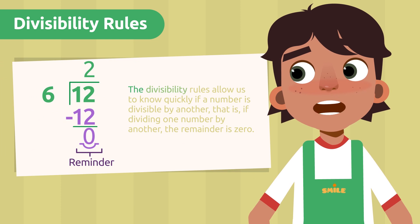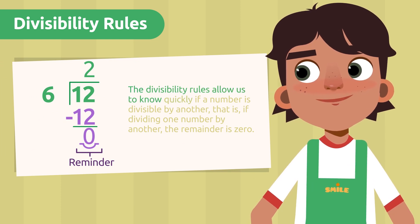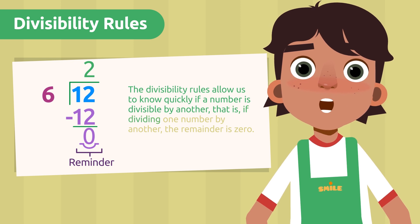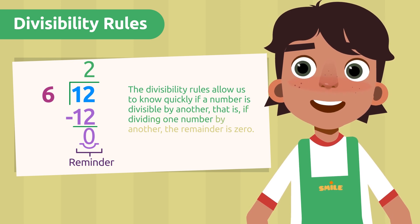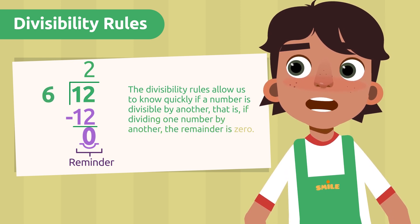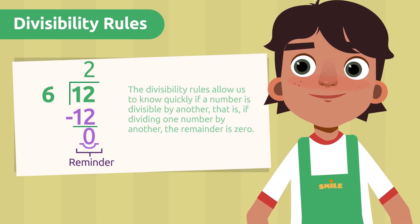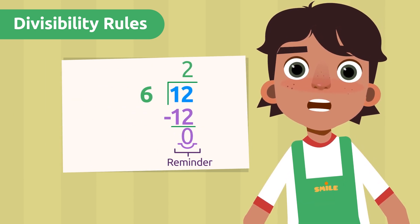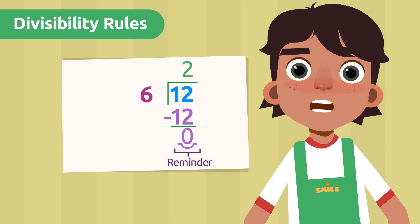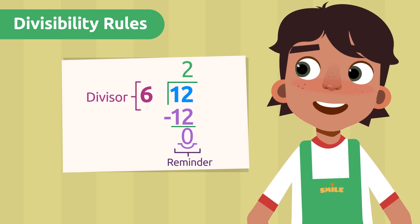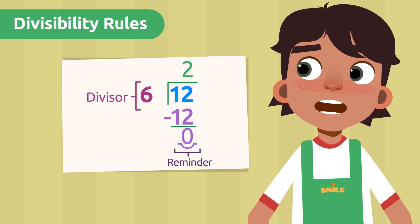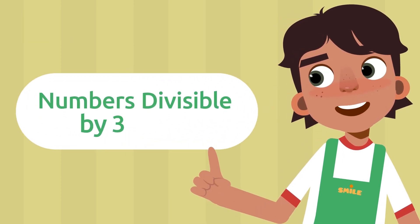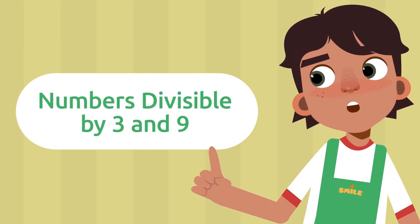The divisibility rules allow us to know quickly if a number is divisible by another. That is, if dividing one number by another, the remainder is zero. When a number is divisible by another number, the number that we have divided it by is known to be its divisor. Today we'll talk about all those numbers that are divisible by three and nine.